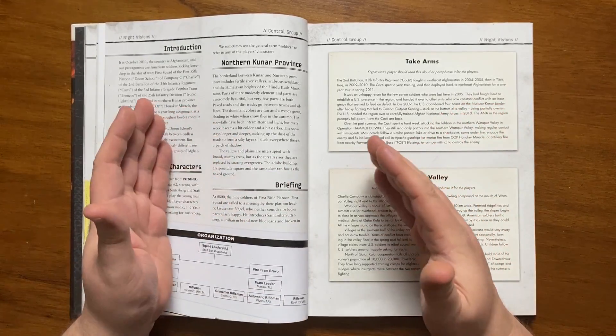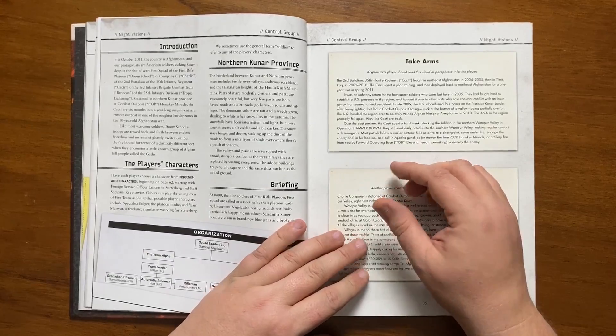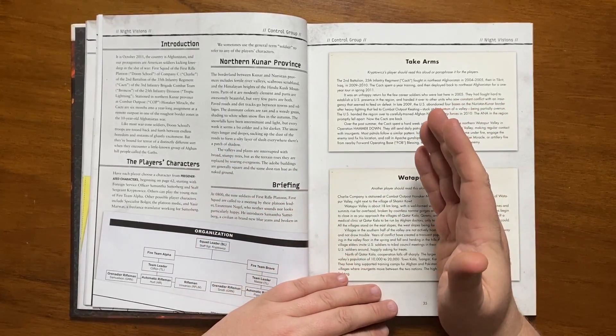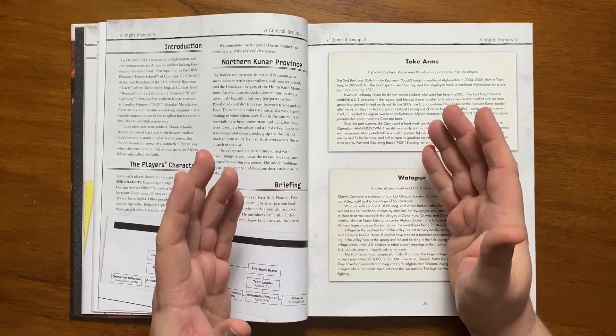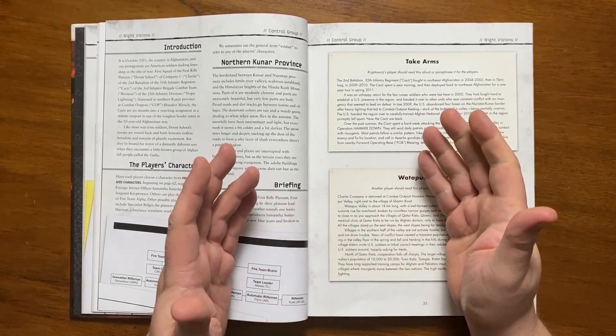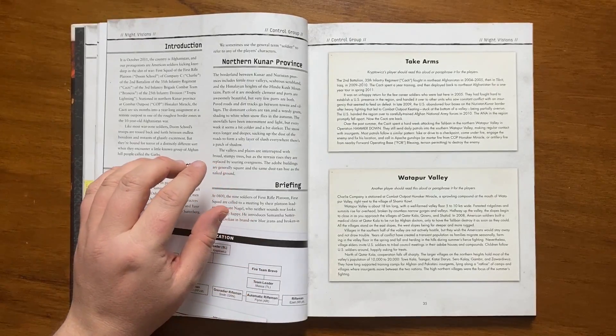The game is run on a group of pre-gen characters where they play Fire Team Alpha. The first one to be decided on is Foreign Service Officer Samantha Sutterberg followed by Staff Sergeant Kryptowicz. Once these are settled upon, the rest of the team consists of Team Leader Clifton and 3 Rifleman. There is also a translator, Yassir Marwat, involved.